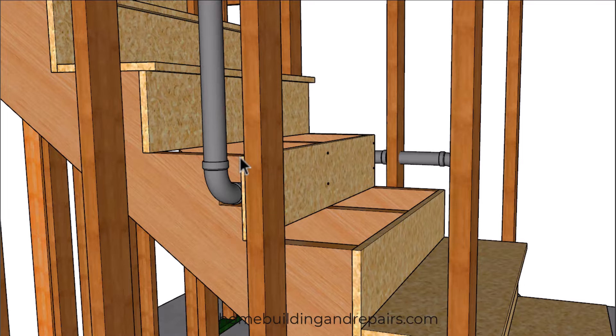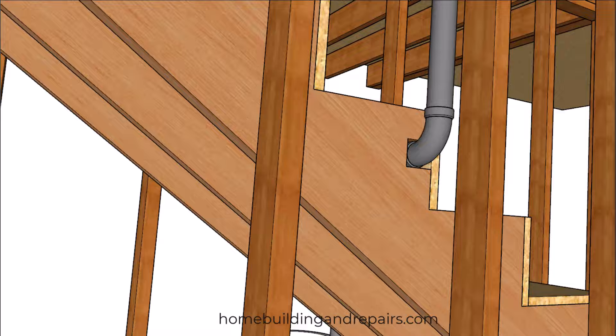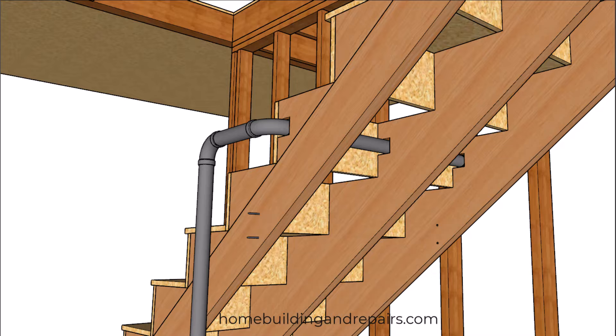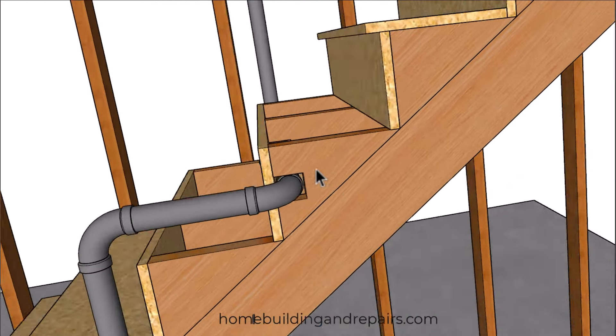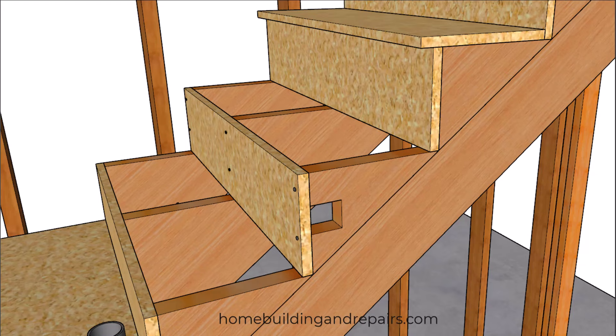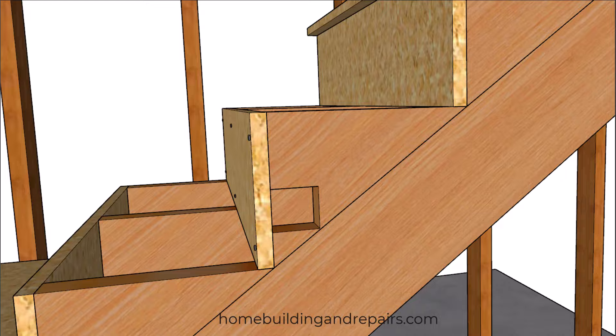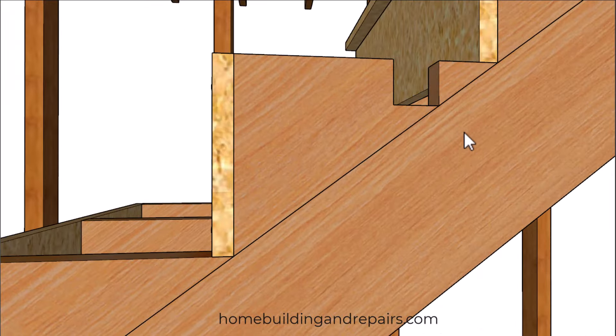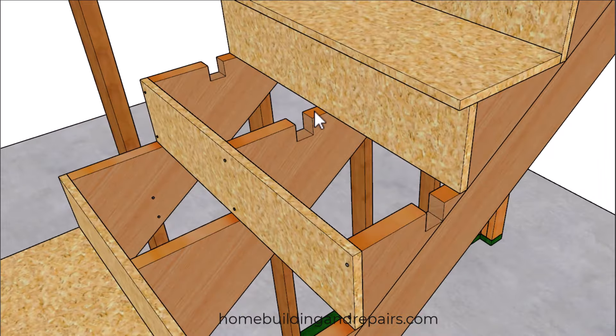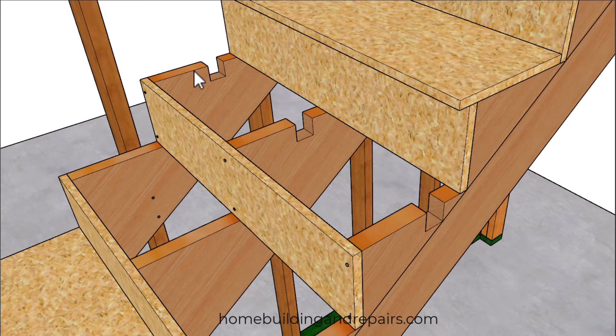And the only problem that I have with the location here is that you could have a section of the stringer actually split here. So this right here would be a weak point on the stringer. And this might not be the best position for our pipe. So you can either lower it like we've done here or move it over to here. And I think this is going to provide us with the best location because we're going to be able to nail the back of the tread as well as not worrying about the front of the stringer splitting off here.